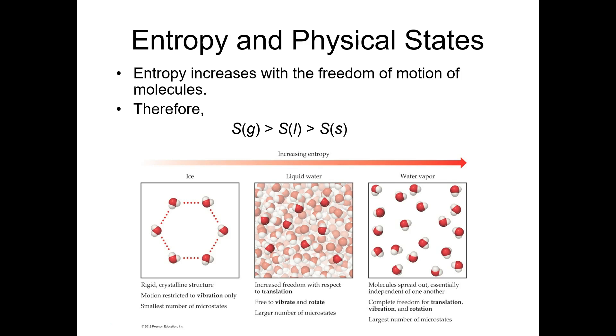To illustrate: ice in solid form is held rigidly, so its microstates are limited to vibration only. Liquid water has vibrational and rotational freedom plus some translational movement, increasing microstates and entropy. In the gas state, there is total freedom of translational, vibrational, and rotational movement. Now let's talk about reactions — not just physical changes. What will increase the entropy when a reaction occurs?